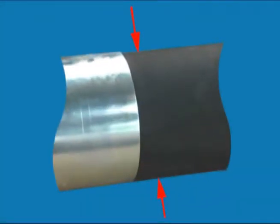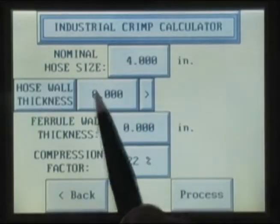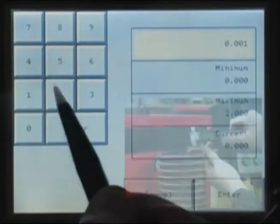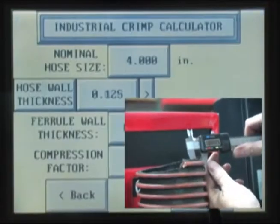At this point, there are two options to determine the hose's outside diameter. Pressing the button to the right of the hose wall thickness button will bring up a keypad where the measured wall thickness can be entered.